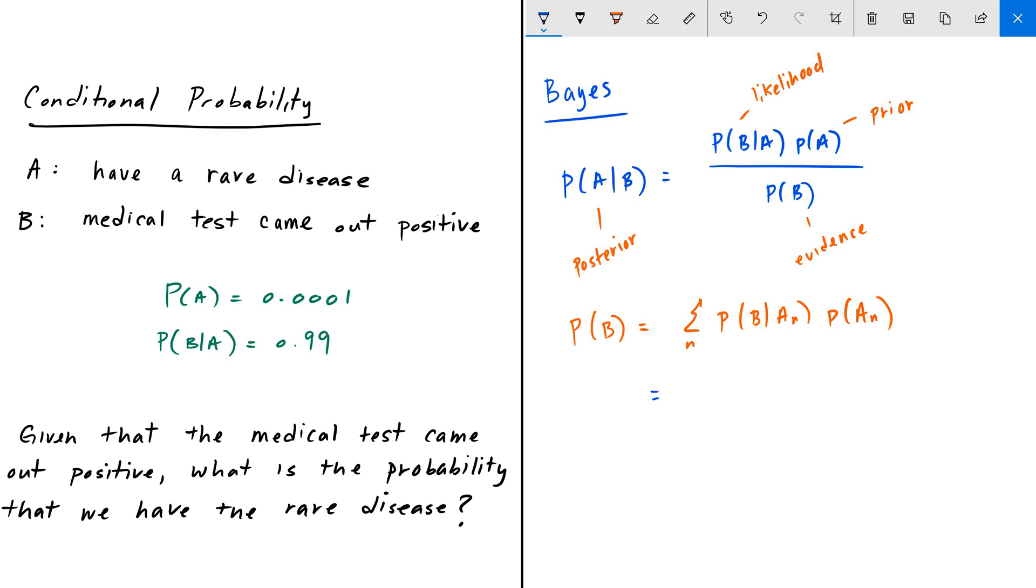Then here, we can determine the probability of A given B. We know what the likelihood is - it's given as 0.99. The prior is the probability of A, that's also given - that's 0.0001. And then we're dividing it by the probability of B, which is going to be the sum of these conditional probabilities here, which is the probability of B given A times the probability of A, plus the probability of B given not A, times the probability of not A.